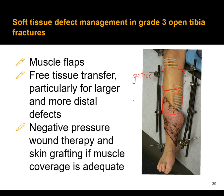In the middle third, traditionally we say that if the soleus is available and can be rotated into a defect, it can help cover it. In the distal third, traditionally it's free tissue transfer, although the reverse soleal flap is a common option that some surgeons are using for rotational flap coverage. But this is still the traditional breakdown used frequently.